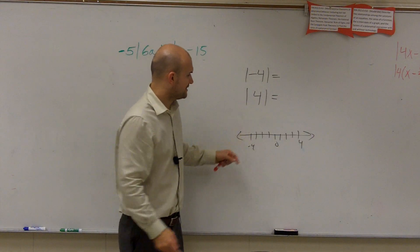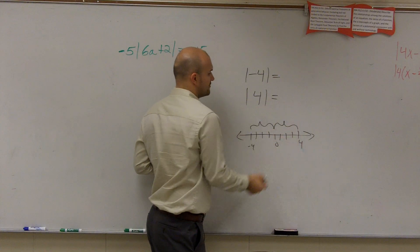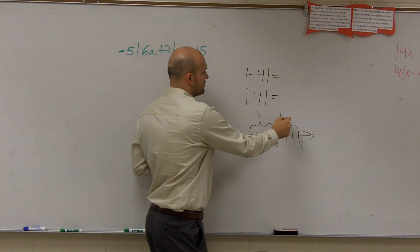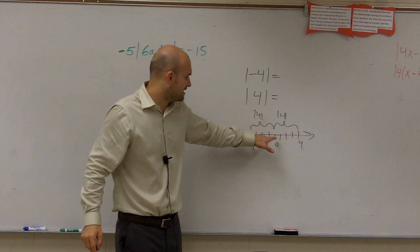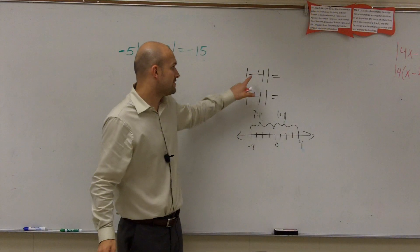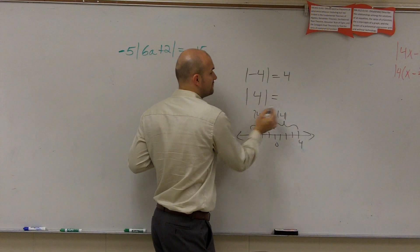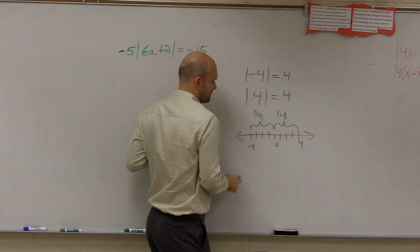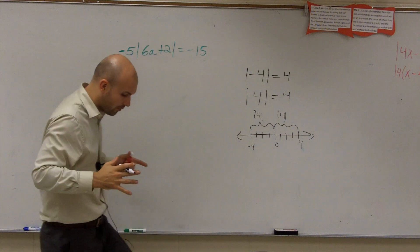When I'm looking at the distance from negative 4 to 0 and 0 to 4, I notice that both of those distances are what we call the absolute value. The distance you get from 0 to negative 4 and from 0 to 4 is both 4. Therefore, the absolute value of negative 4 is equal to 4, and the absolute value of 4 is also equal to 4.